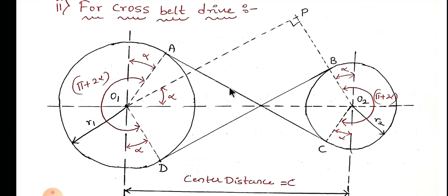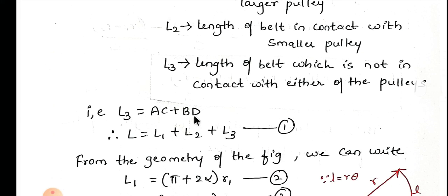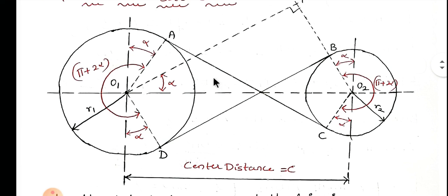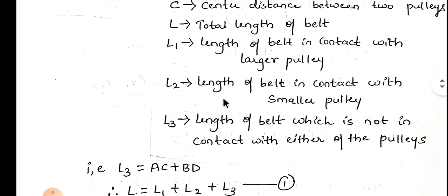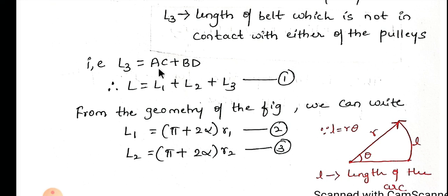L3 is the length of belt which is not in contact with either the larger pulley or the smaller pulley. From point D to B, the belt is not in contact with any pulley. Similarly, from point A to C, the belt is not in contact with either pulley. The sum of these lengths, AC plus BD, is nothing but L3. Here I have described all the various terms.